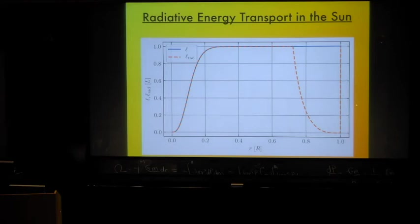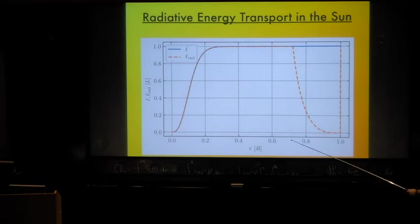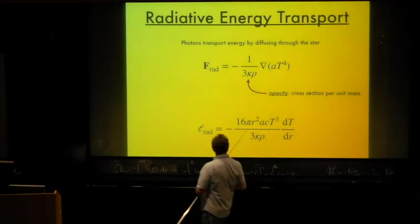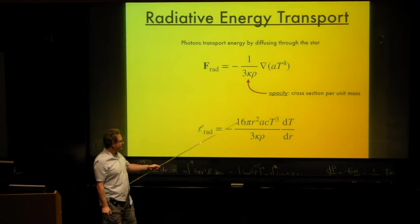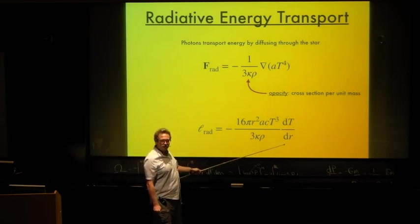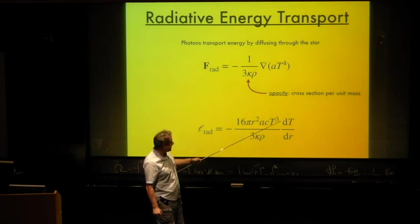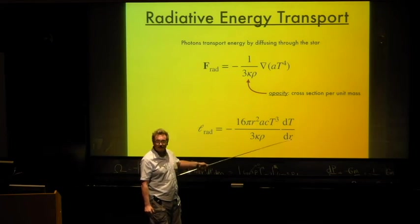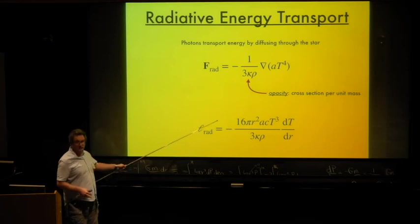That drop is due to convection. There's a large convection zone in the outer 30% of the Sun, starting at about 70% of the Sun's radius. In the convection zone, convection starts transporting energy, and when energy is transported from a hot region to a cold region, it smooths out the temperature gradient — making it shallower. Convection reduces the temperature gradient in the radiative diffusion equation, which means photons have a hard time diffusing, so the radiative luminosity drops drastically.